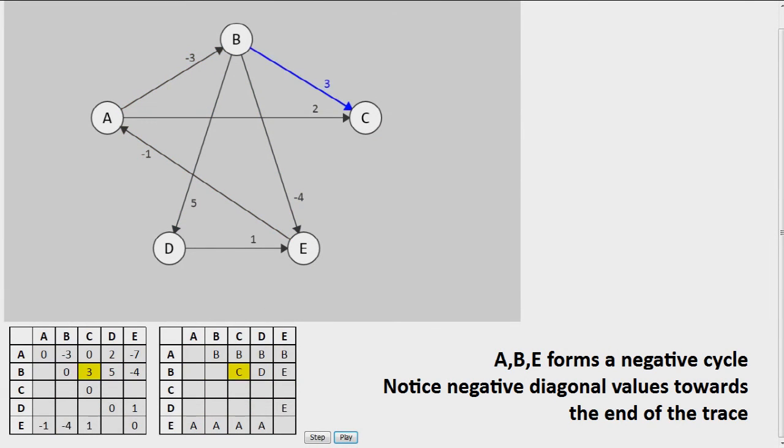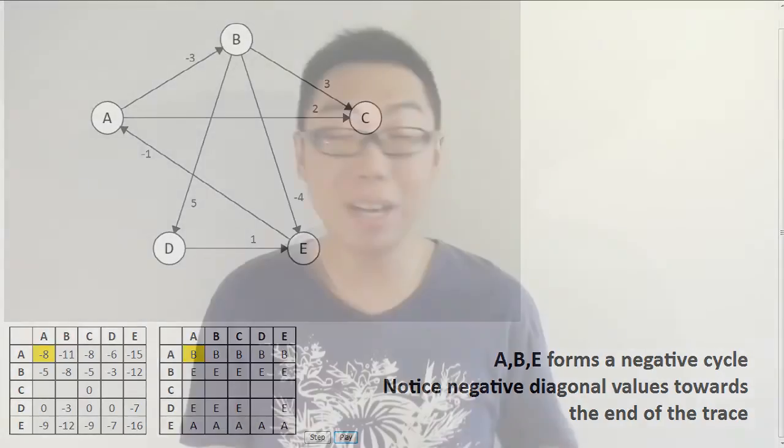But here's the deal, if a negative cycle exists, what's gonna happen is, it is actually cheaper to go through a negative cycle back to yourself. What this means is, at the end of the day, if you find that any value on a diagonal is actually negative, it means that there is a negative cycle somewhere, because that reflects the fact that we've actually taken a shorter path through a negative cycle. So yeah, that's how you check for negative cycles in the Floyd-Warshall's algorithm.